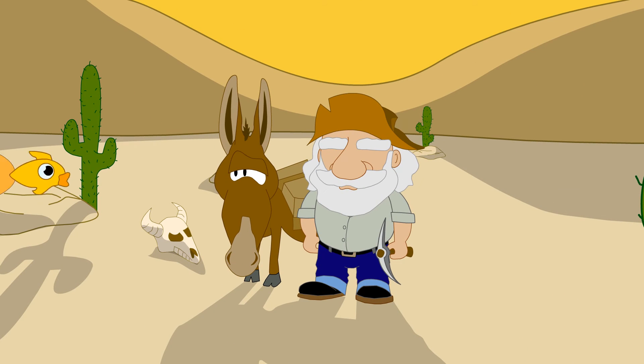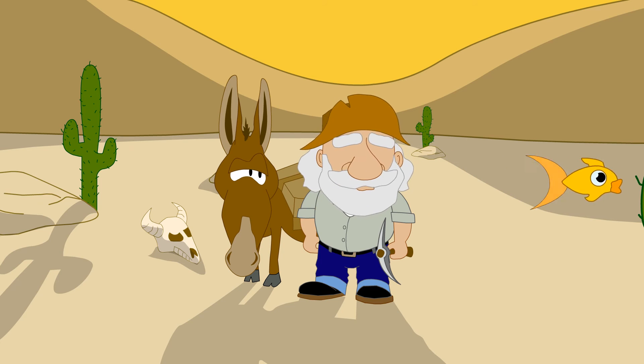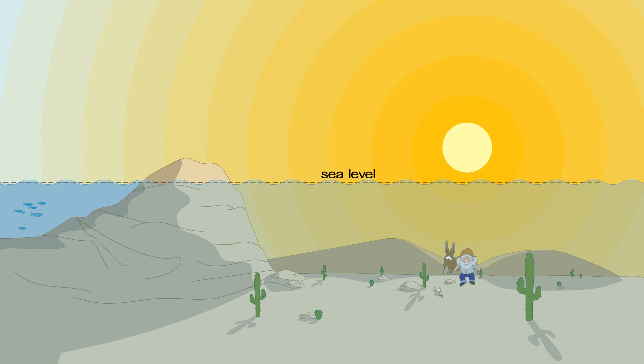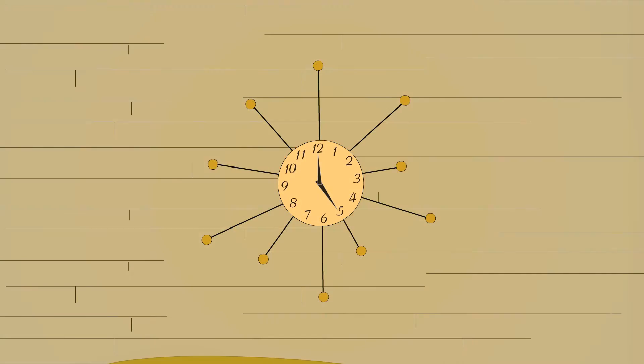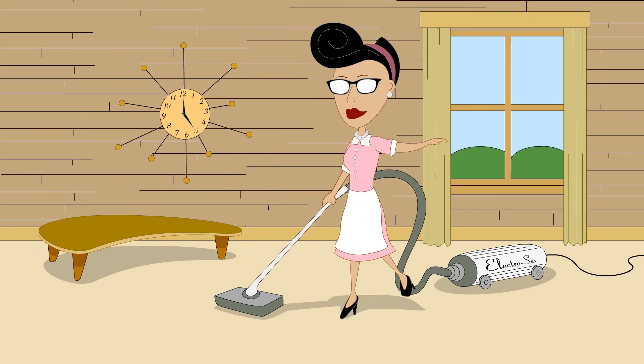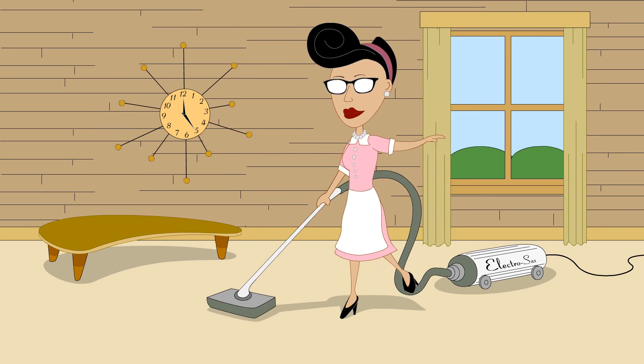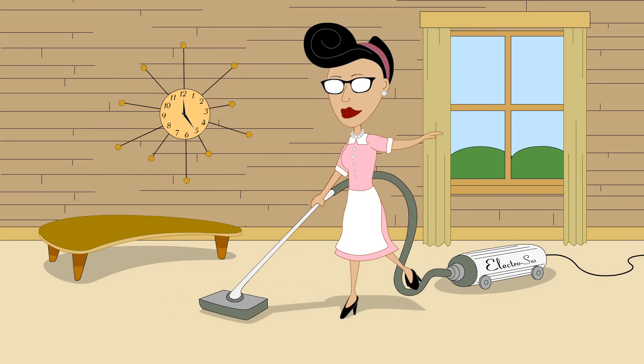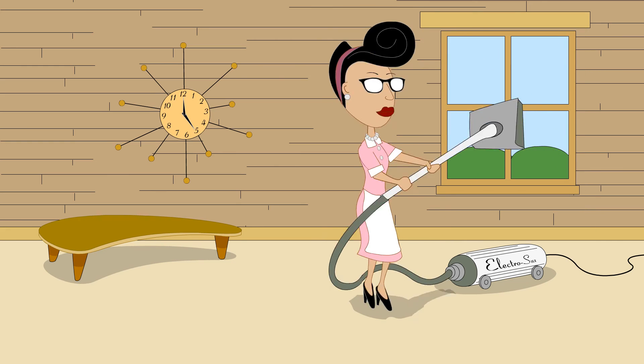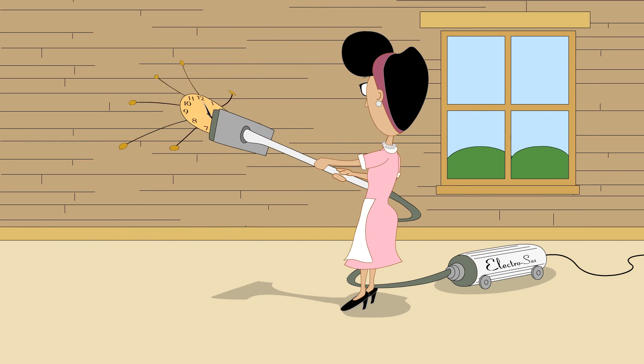Death Valley is below sea level, so the altitude of Death Valley could be thought of as a negative altitude. A vacuum cleaner creates an air pressure which is less than atmospheric pressure, so it can be thought of as creating a negative pressure.